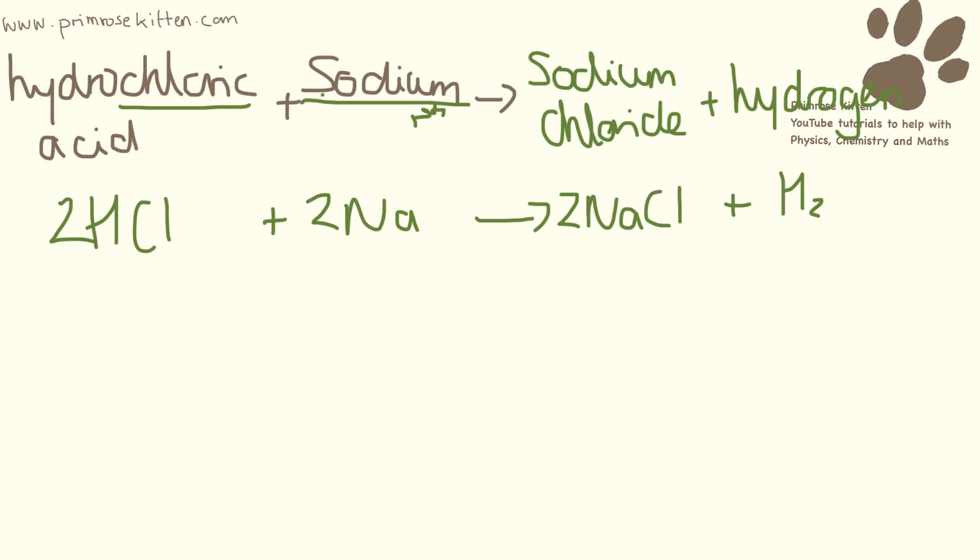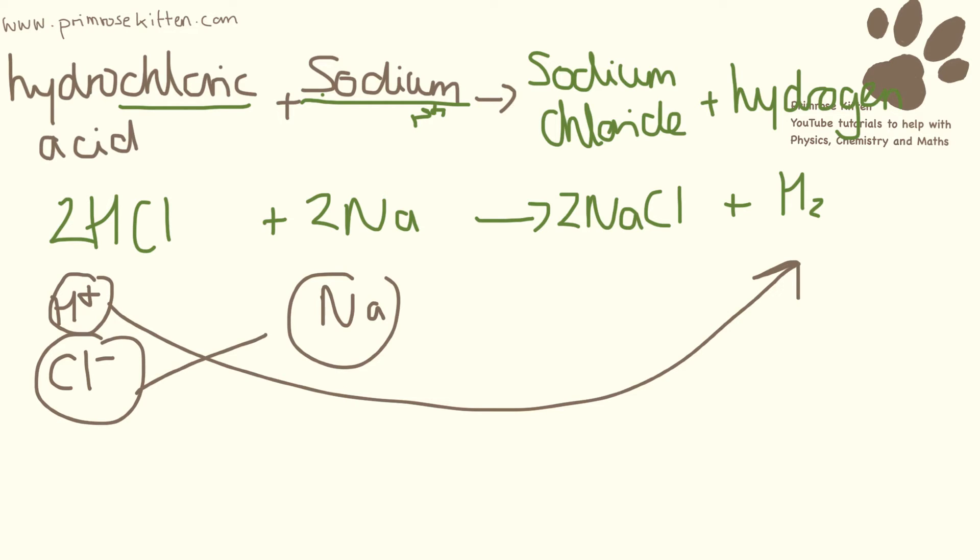The other way to do this is to look at the equation and work it out from the equation. So hydrochloric acid, we have hydrogen and chlorine, and sodium, we just have sodium. We know hydrogen is going to be produced, and that takes this away to make hydrogen. So that goes over there, and the things that we are left with are sodium and chlorine. So they have to go together to make sodium chloride.